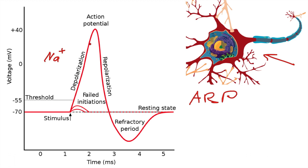In order for another action potential to happen, those voltage-gated sodium channels need to be reset to closed. When we reach the repolarization phase and potassium rushes out, the membrane potential starts going down, and as it starts going down, the voltage-gated sodium channels start resetting to their closed state.